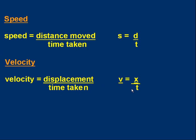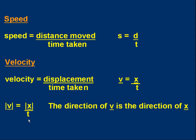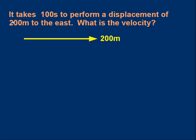Now that's different to the speed equation because we've got to consider direction. So if we work out a velocity, the magnitude of the velocity — the speed part — is simply the magnitude of the displacement, which is the distance, over the time. And the direction of the velocity is the same as the direction of the displacement. Let's do an example to illustrate this. Suppose it takes 100 seconds to perform a displacement of 200 metres to the east. The question is: what is the velocity? Pause to think about this for yourself.